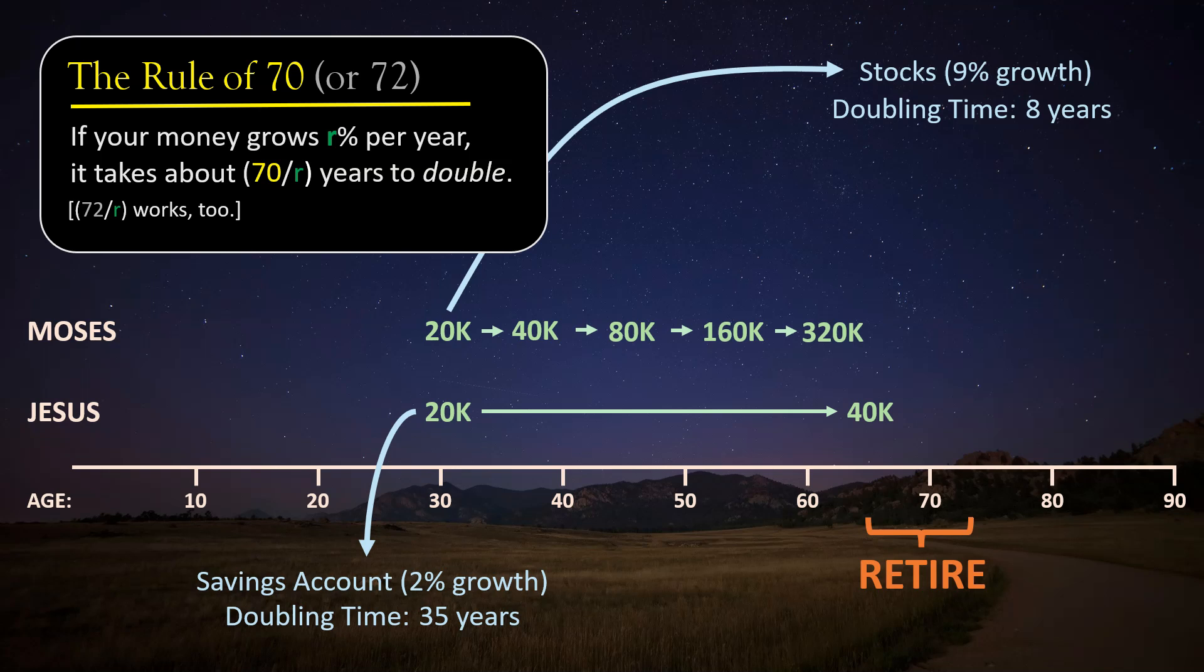Eight years later, when he's 70, that money has doubled again to $640,000. So by the time these two men are approaching, or at, retirement age, the choices they made as to what to do with their money at the age of 30 have led to very significant differences in wealth, and of course, we've only followed one decision that they've made.